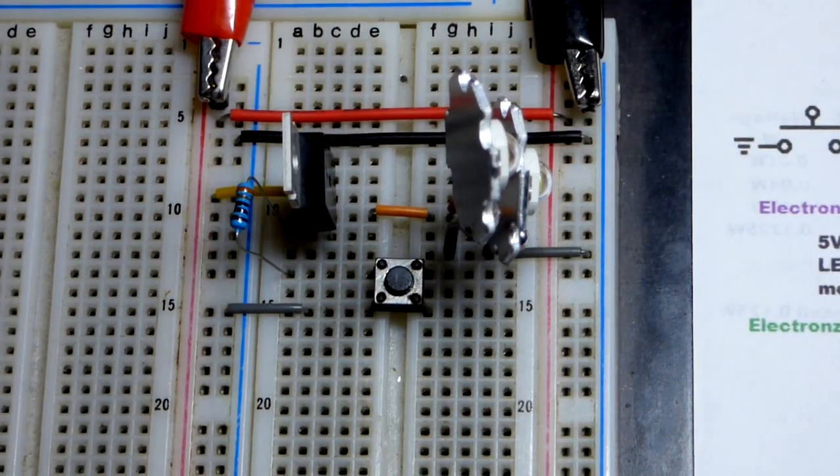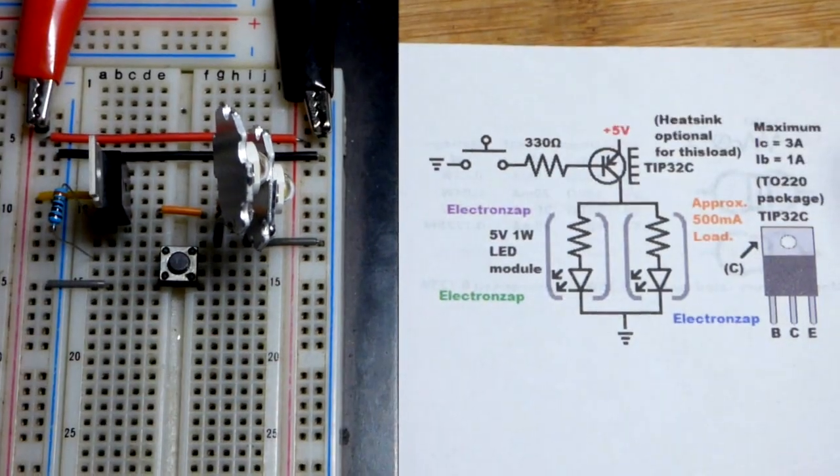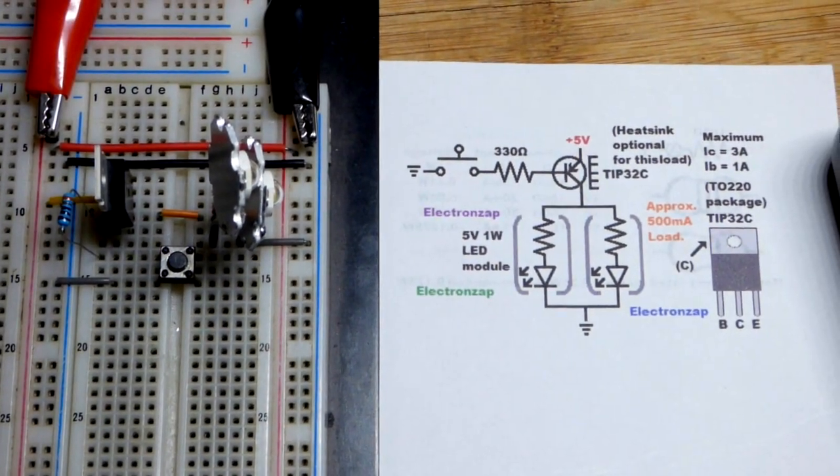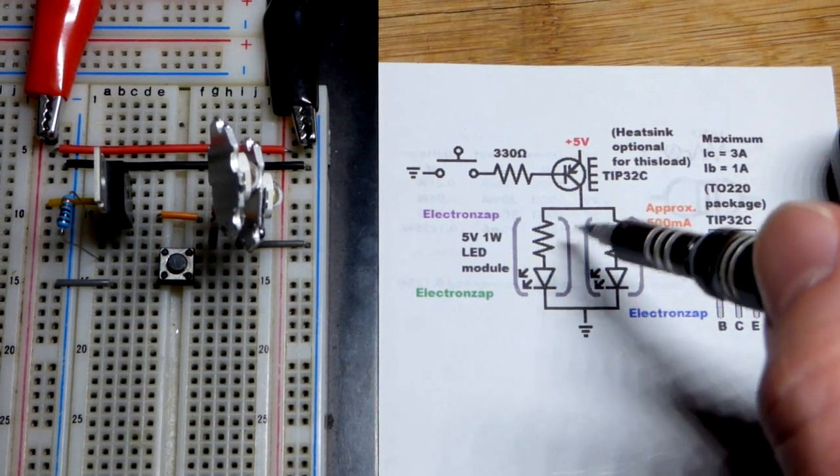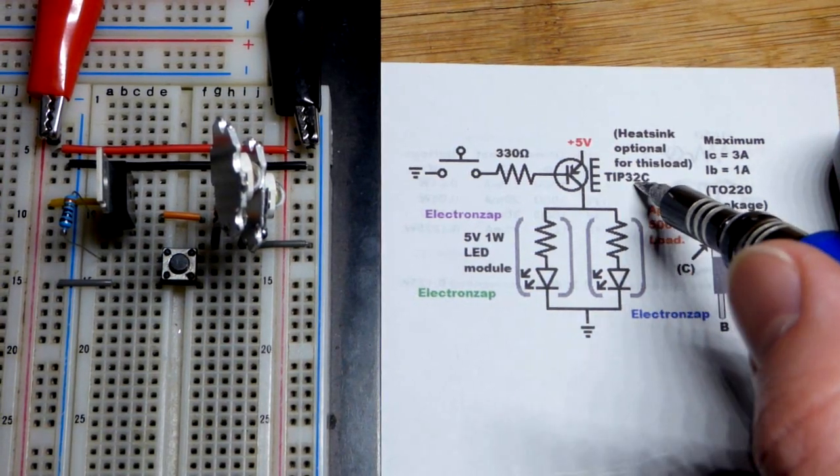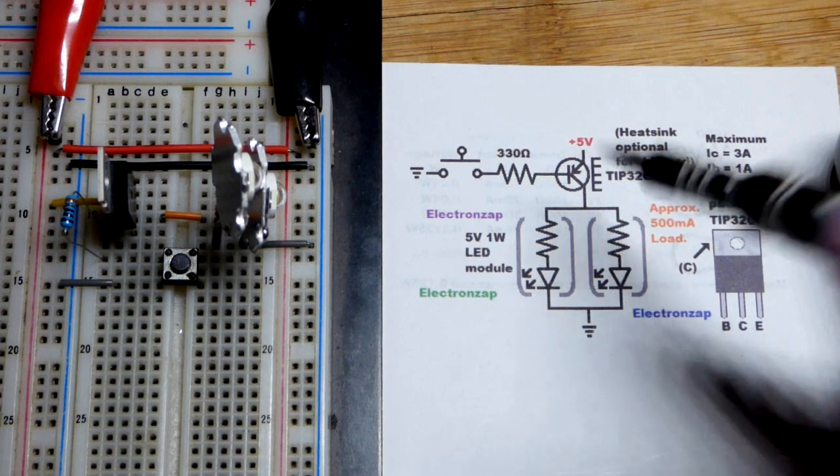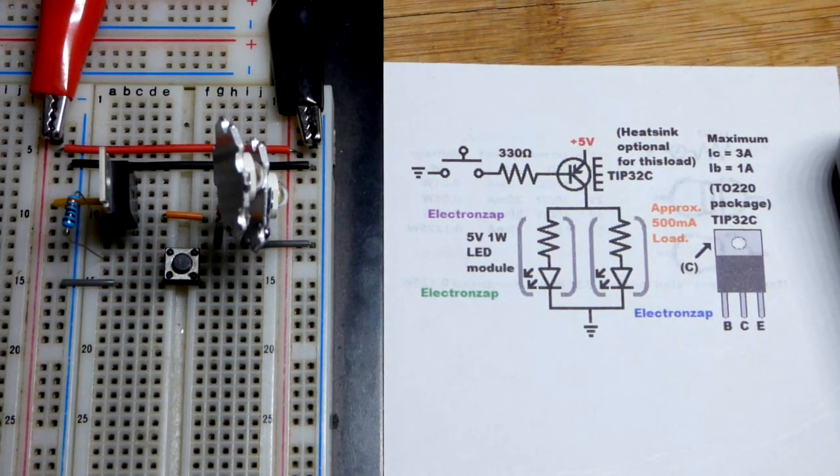And there you can see that they lit up right there. So in any case, we have higher current demands than most circuits. A higher wattage transistor that we could use here. Probably want a heat sink for most circuits. But this one, we can get away without it. So we're not going to worry about it.